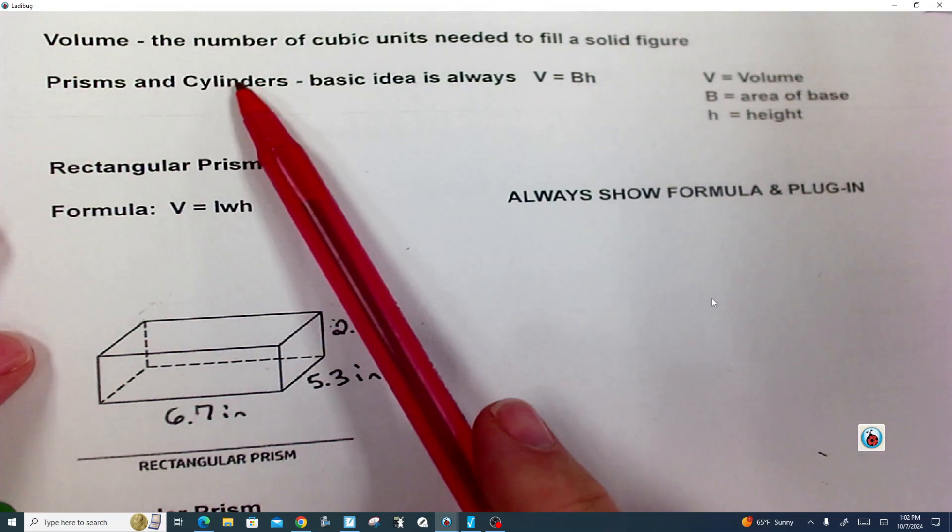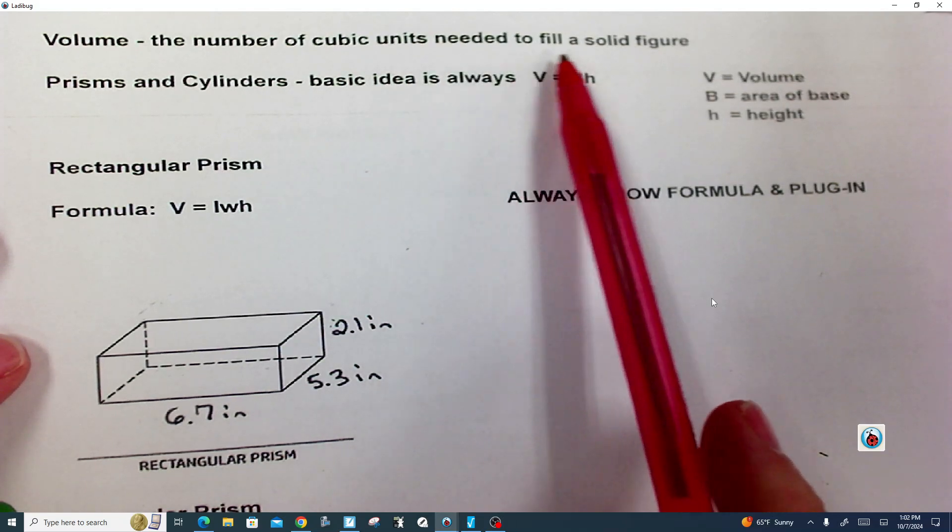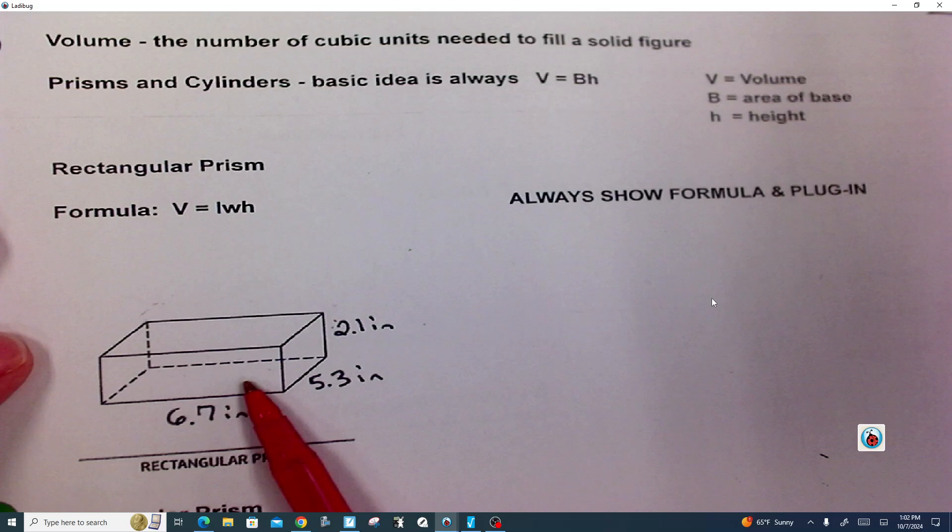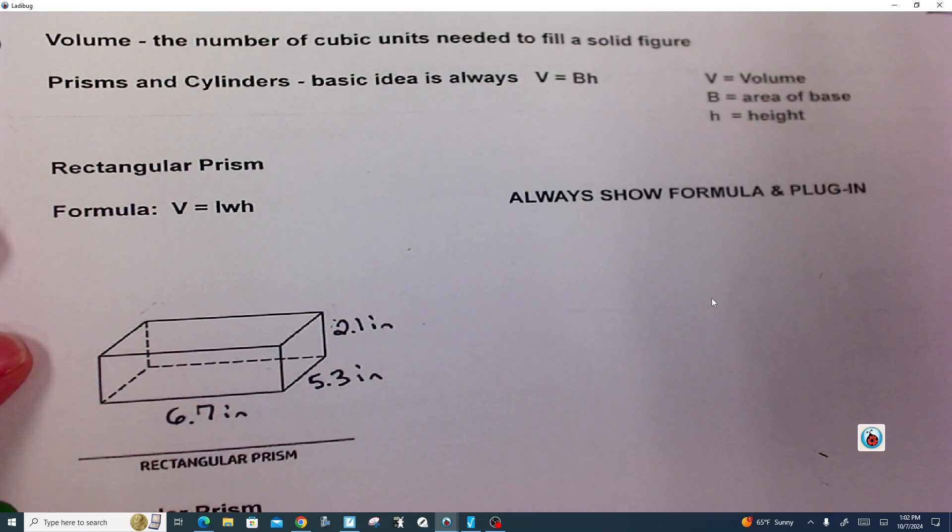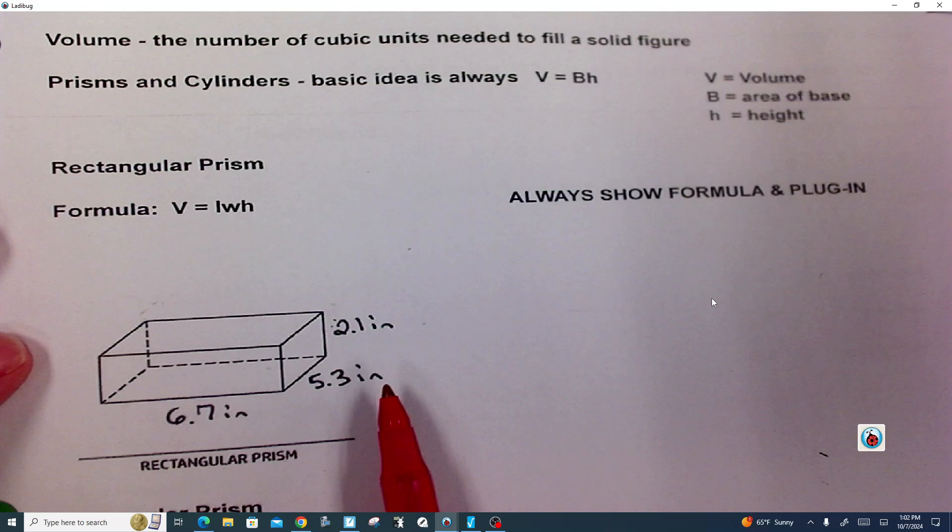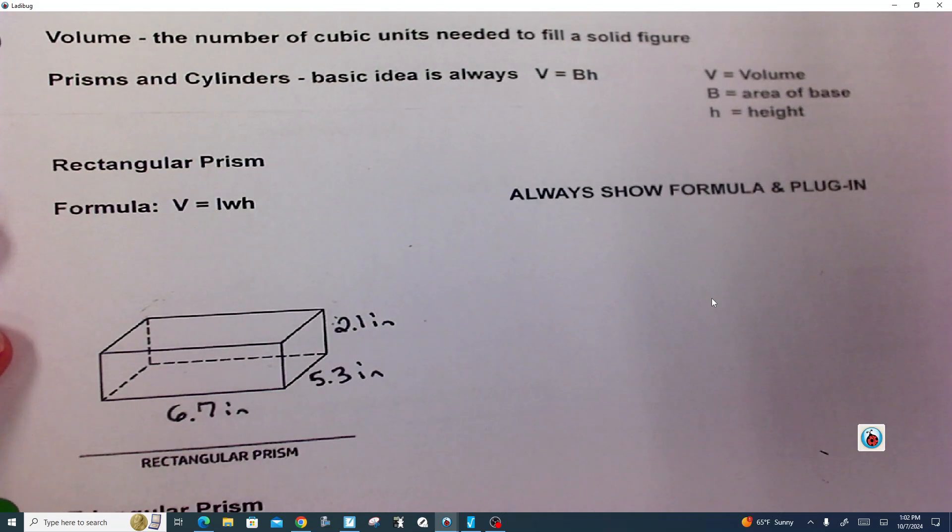So volume is the number of cubic units needed to fill up something. So if we put like ice cubes inside of this box right here, we'd be saying well, how many ice cubes could fill it up? Of course, this is a pretty small box. It's 6.7 inches long, 5.3 inches wide, and 2.1 inches high.